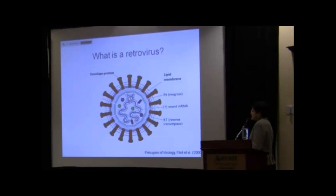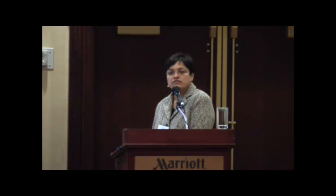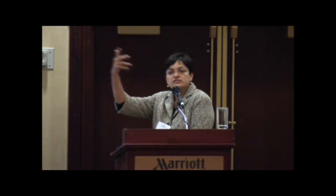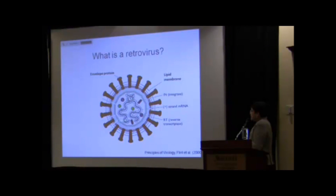Inside the envelope is a nucleocapsid, or protein shell, that contains the viral genome. A retroviral genome is special in that it is made up of RNA. The reason it's called a retrovirus — meaning retro — is because normally in the cell, information flows from DNA to RNA and from RNA to proteins. In a retrovirus, it flows backwards, from RNA to DNA. This genome is copied by a special enzyme the virus brings with it called reverse transcriptase, into DNA.